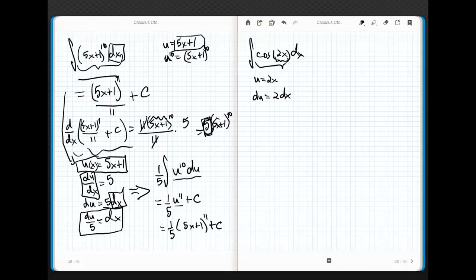Remember over here and in the earlier problem I did the du over dx. Now I'm just going to cheat. I'm just going to go du equals 2 dx, because I know that I would algebraically send the dx across anyway.